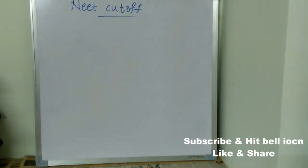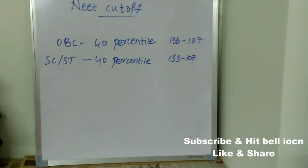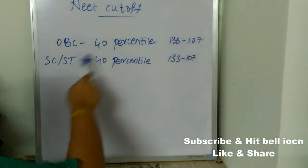Now let's see what is the NEET cutoff for this year, category-wise. For OBC, you must get 40 percentile and your mark should be in the range between 133 to 107. For SC-ST, you must get 40 percentile and marks should be in the range between 133 to 107.